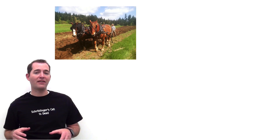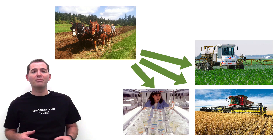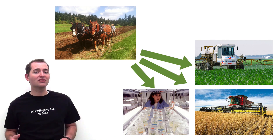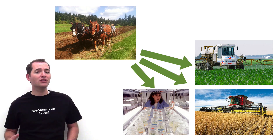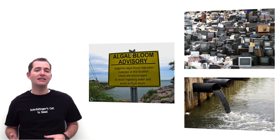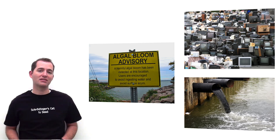Technological advances have had a historical impact on land use by increasing production yields per area of land, making it possible to produce more crops per area. This thereby reduces the amount of habitat change that's necessary. On the other hand, technology can also degrade ecosystem services and resources.